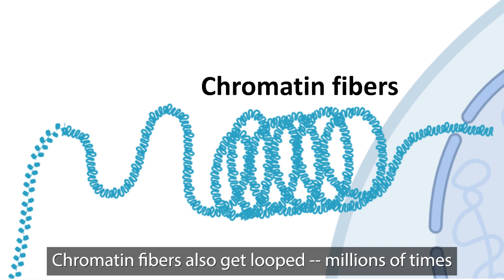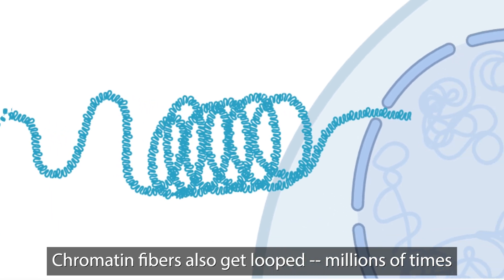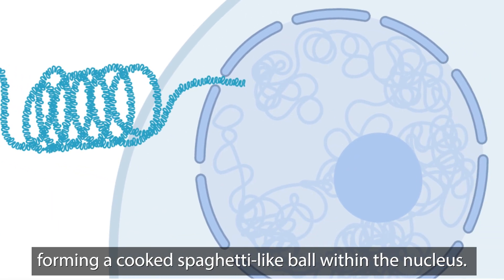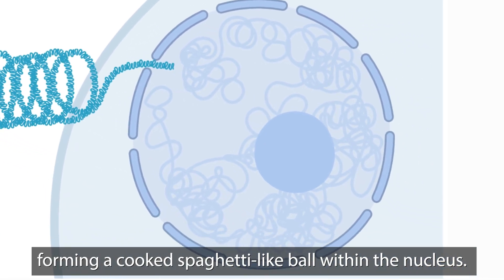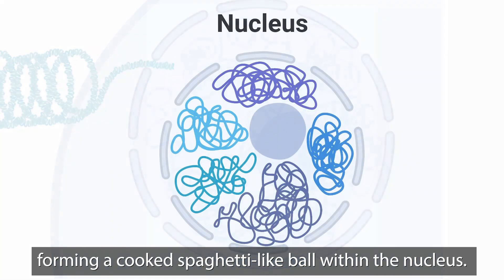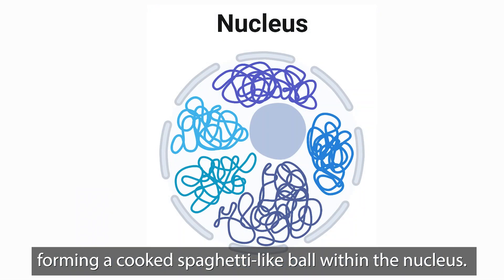Chromatin fibers also get looped millions of times, forming a cooked spaghetti-like ball within the nucleus.